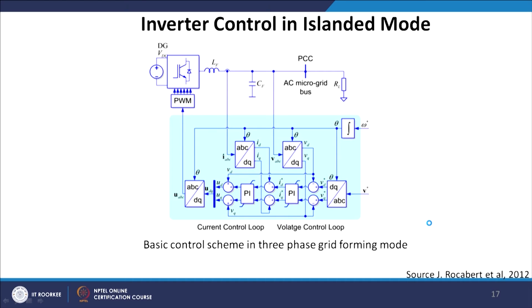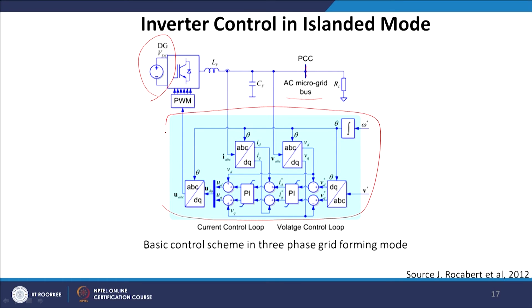The basic control scheme in three-phase grid forming mode shows the AC microgrid with the PCC, distributed generators, and the complete control loop for both current and voltage.